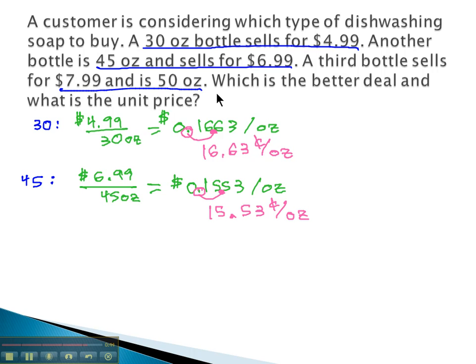Finally, we've got this 50 ounce bottle for $7.99. We'll take the price, $7.99, divided by the 50 ounces. 7.99 divided by the 50 ounces is 0.1598 dollars per ounce. Same process every time: price divided by size, then make it into cents by moving the decimal twice, 15.98 cents per ounce.